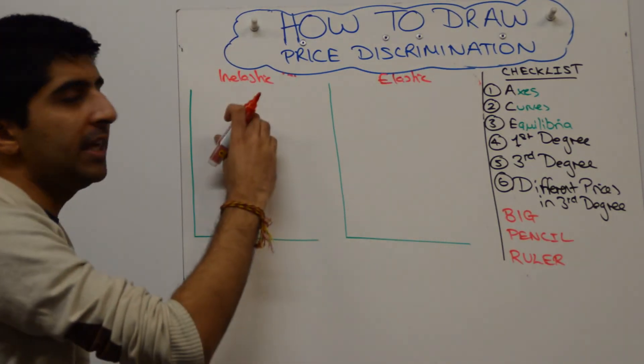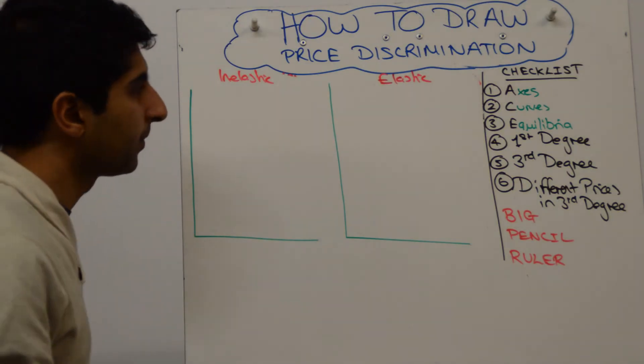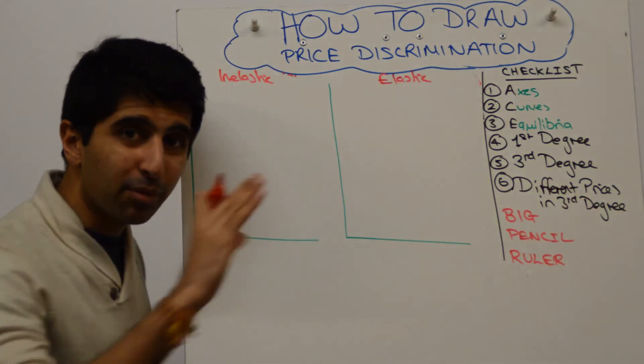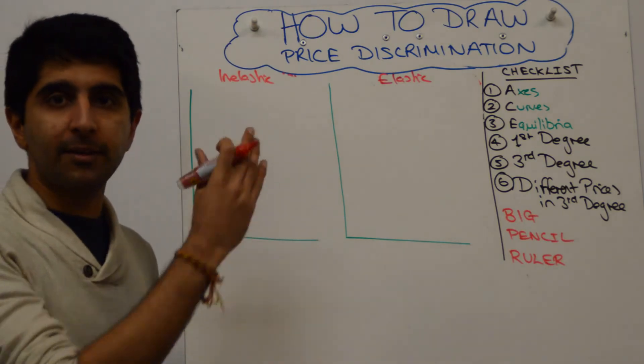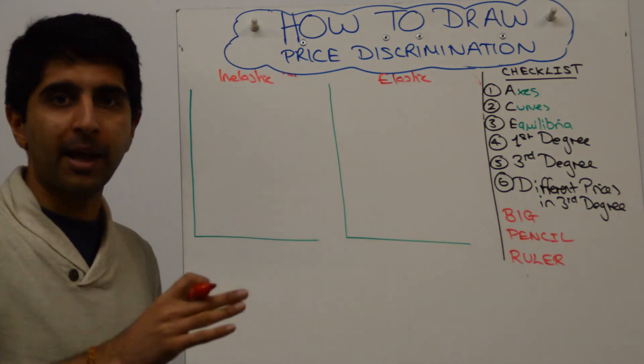Okay, so think peak and off peak for like rail travel, for example. And what we're trying to show is this different prices idea. So obviously, when there is inelastic demand, higher prices, elastic demand, lower prices.